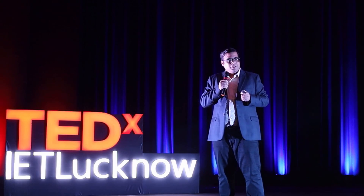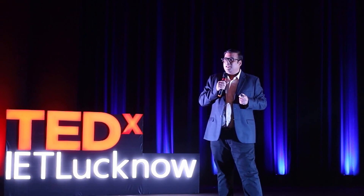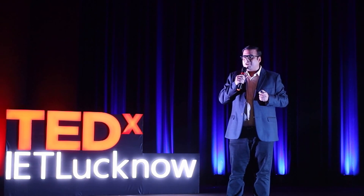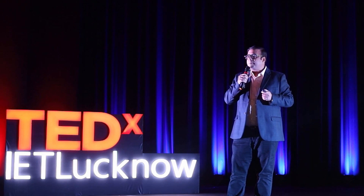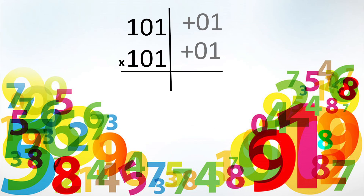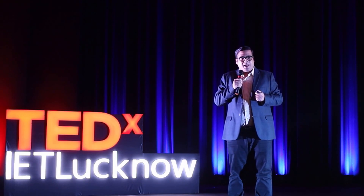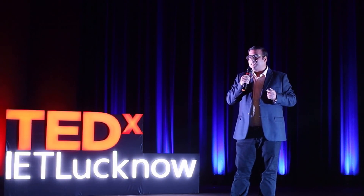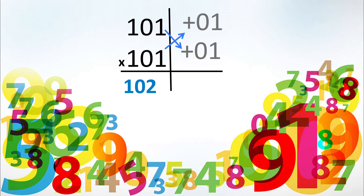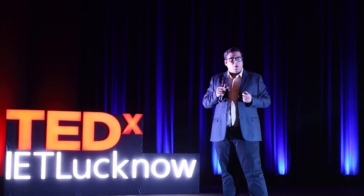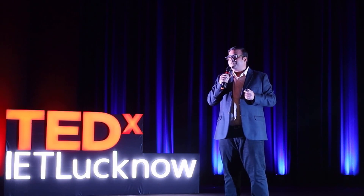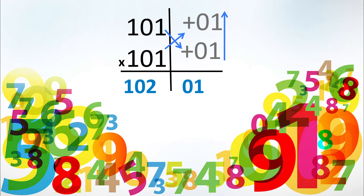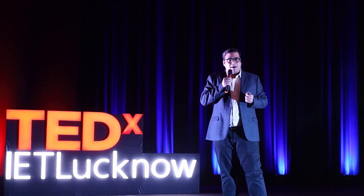We're going to do mental squaring today. The same principle applies, except the numbers are close to 100. Is 101 above 100? Above by how much? So write plus 01. Again write plus 01. Crosswise add: 101 plus 1 gives you 102. And 01 multiplied by 01 gives you 01. Your answer is 10201. Let's see if you can do the next sum mentally.